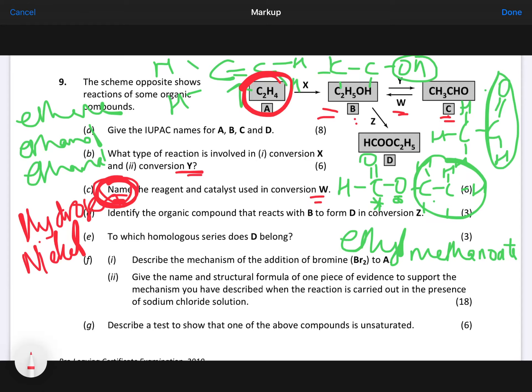Part D then says identify the organic compound that reacts with B. So B is ethanol. And you're trying to form ethyl methanoate. Methanoate. So what would you need there? You would need methanoic acid. Sometimes they might ask you for the catalyst required for esterification. So you would need hydrogen ions from something like conc sulfuric acid. But they didn't ask you that there. They just wanted the organic compound. So you could just say methanoic acid there. The homologous series to which D belongs. They belong to esters.